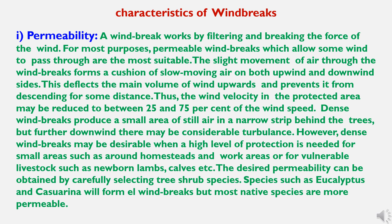Dense windbreaks produce a small area of still air in a narrow strip behind the trees, but further downwind there may be considerable turbulence. However, dense windbreaks may be desirable when a high level of protection is needed for small areas such as around homes, streets, and work areas, or for vulnerable livestock such as newborn lambs and calves. The desired permeability can be obtained by carefully selecting tree and shrub species.